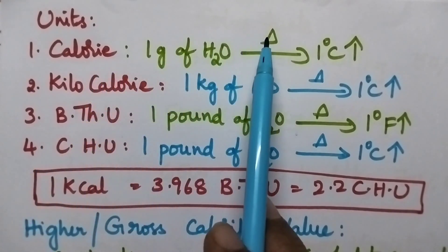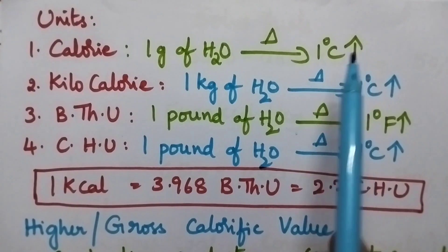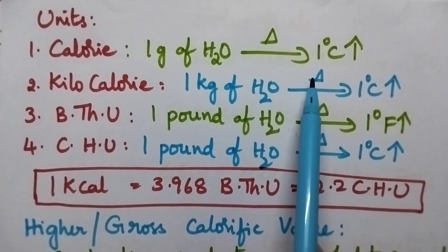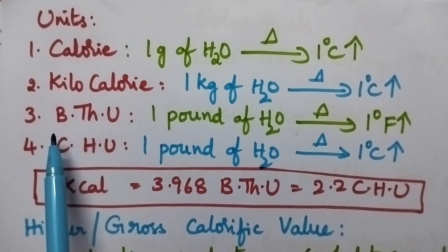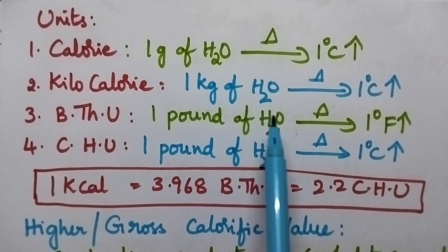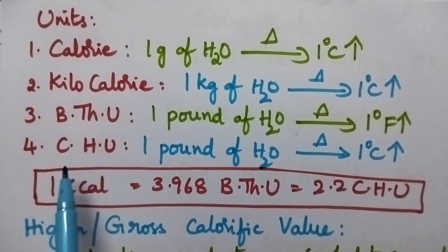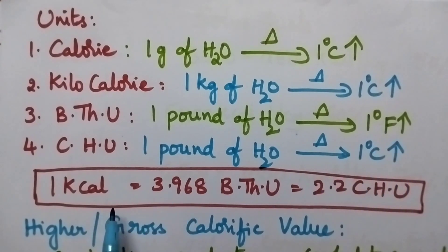Coming to the calorie, it is the amount of heat required to raise the temperature of 1 gram of water through 1 degree centigrade. Coming to the kilocalorie, it is the amount of heat required to raise the temperature of 1 kg of water through 1 degree centigrade. Moving to British thermal unit, it is the amount of heat required to raise the temperature of 1 pound of water through 1 degree centigrade. And finally, centigrade heat unit is the amount of heat required to raise the temperature of 1 pound of water through 1 degree centigrade. So if we see the relation among the units, 1 kilocalorie is equal to 3.968 British thermal units, that is equal to 2.2 centigrade heat unit.